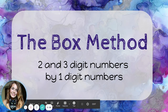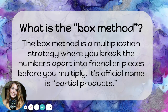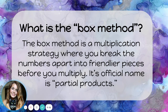Let's use the box method to multiply two and three digit numbers by one digit numbers. The box method is a multiplication strategy where you break the numbers apart into friendlier pieces before you multiply. Its official name is partial products.